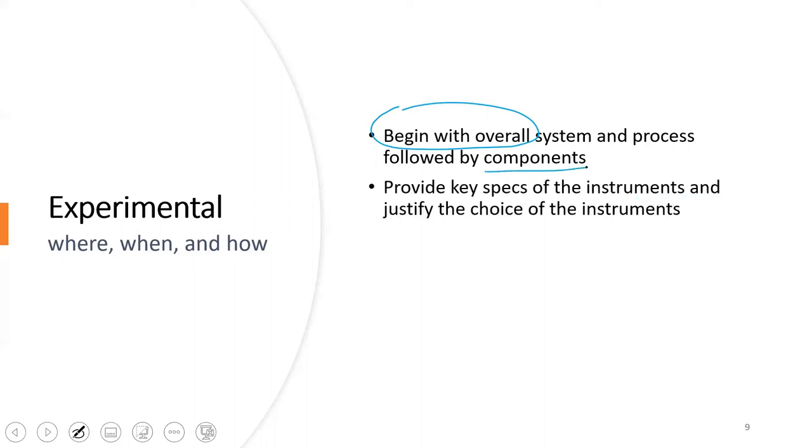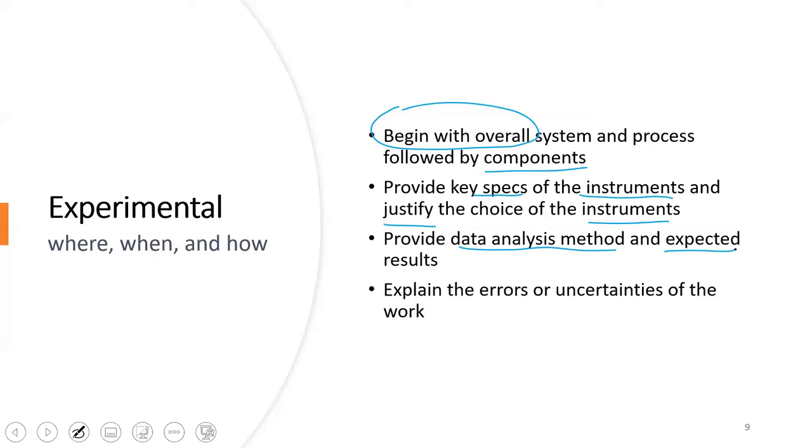If you are working on experimental projects, the key parts are where, when, and how. That's the three W's. The W's must be clearly described. You begin with an overall system or process. You begin with overall engineering, describe the process first, then you move on to the components, and provide even further details on the specifications of the instruments and why you choose these instruments.